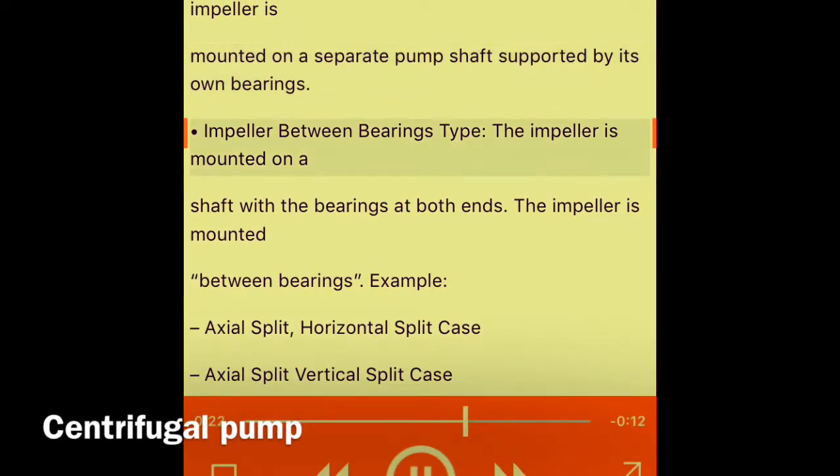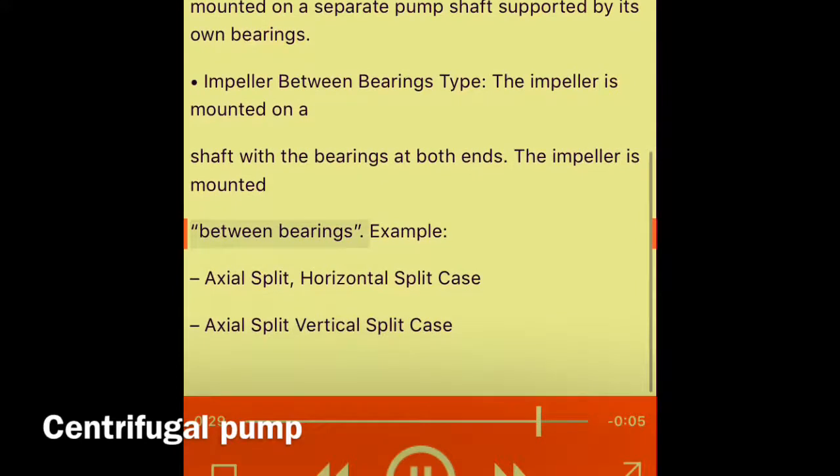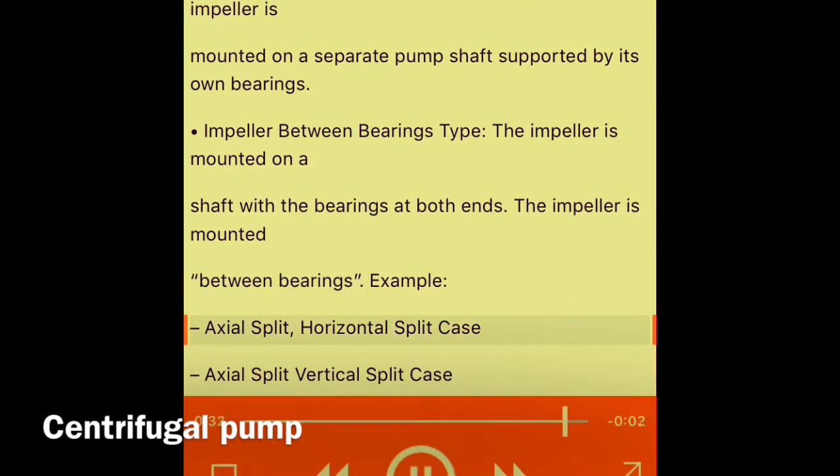Impeller between bearings type: The impeller is mounted on a shaft with bearings at both ends. The impeller is mounted between bearings. Examples include axial split horizontal split case and axial split vertical split case.